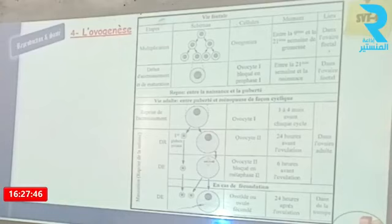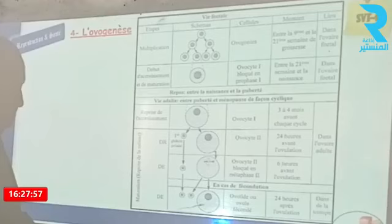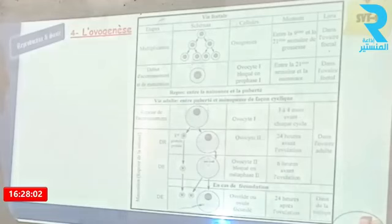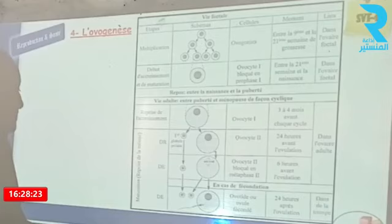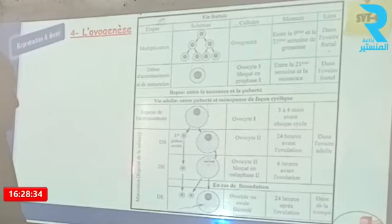L'ovogenèse, c'est le processus de formation de l'ovocyte 2. Rappelons que la spermatogenèse comprend quatre phases : multiplication, accroissement, maturation et différenciation. Contrairement à la spermatogenèse qui est continue, ici il y a une discontinuité : une pause entre la vie fétale et la puberté, et des interruptions selon la présence ou l'absence de fécondation. On note la présence des phases de multiplication, d'accroissement et de maturation.